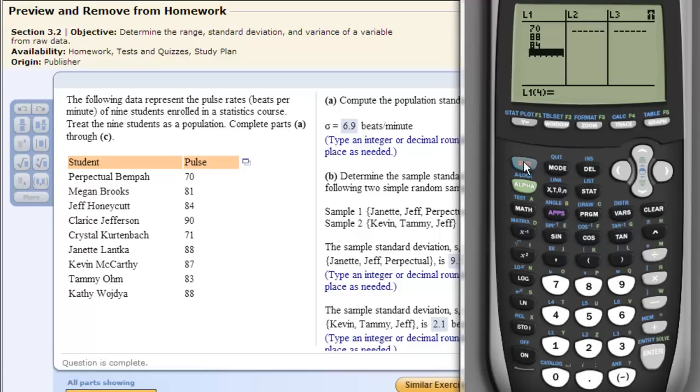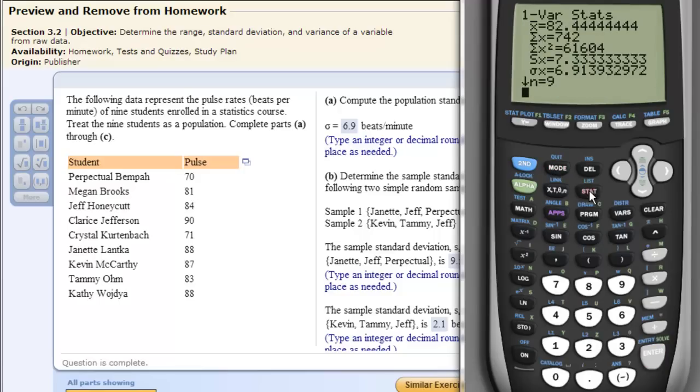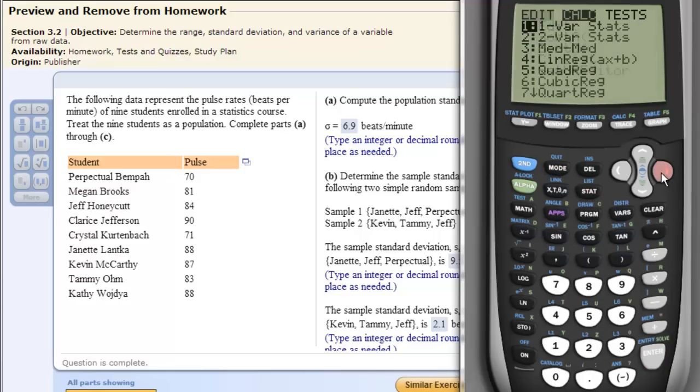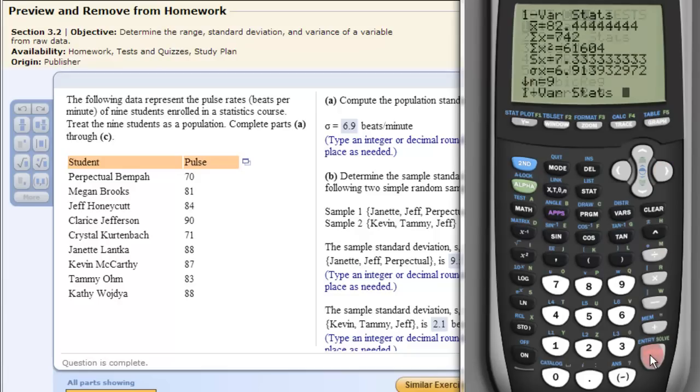Now I second quit, hit my STAT over to Calculate, and 1-Var Stats, Enter again. That's my new mean of my new data, and then my sample standard deviation, 9.45.